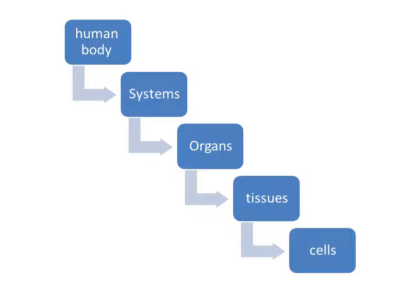Before we talk about the cell, the human body consists of many systems like the digestive system, respiratory system, and circulatory system. Each system consists of organs — for example, the digestive system consists of the mouth, pharynx, esophagus, and so on. Each organ consists of tissues, and each tissue consists of a smaller part called a cell.